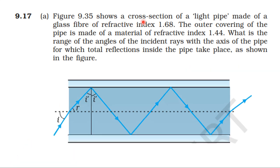Figure 9.35 shows a cross section of a light pipe made of a glass fiber of refractive index 1.68. The outer covering of the pipe is made of a material of refractive index 1.44. What is the range of angles of the incident rays with the axis of the pipe for which total internal reflection inside the pipe takes place?